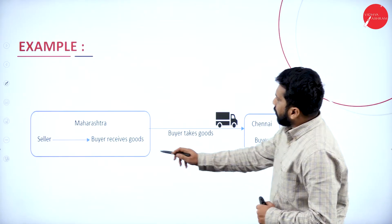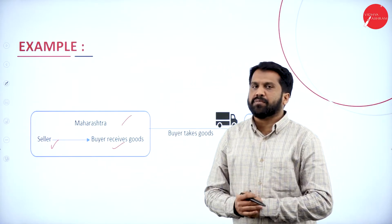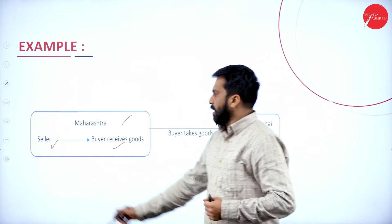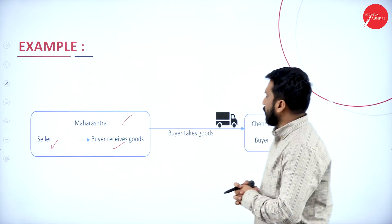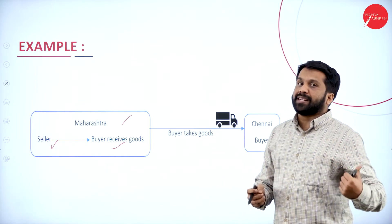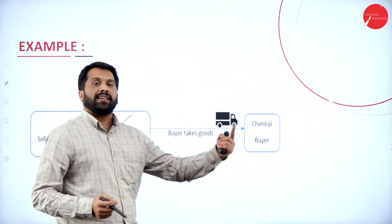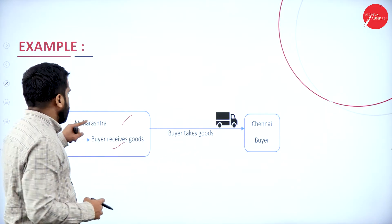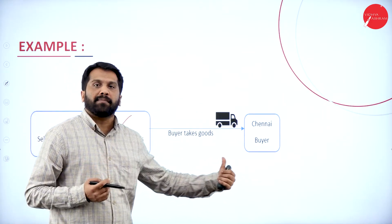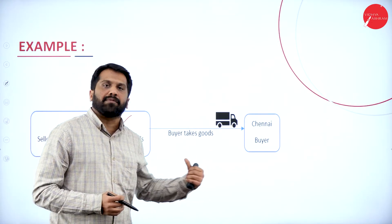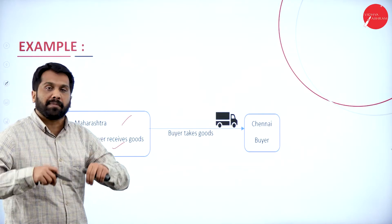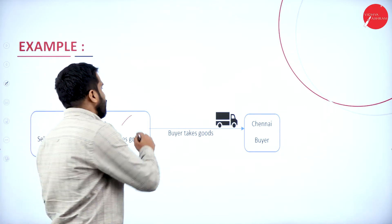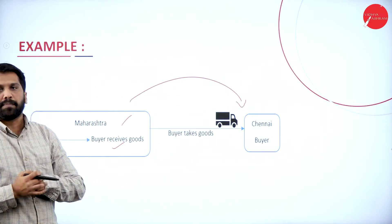The seller is in Maharashtra and the buyer both are in Maharashtra — just assume I want to purchase a mobile. I am in Maharashtra, I am the buyer, and the seller is also in Maharashtra, willing to sell in Maharashtra itself. But I said I will take goods to Chennai — I don't want delivery here, I want delivery in Chennai. So what is the supply of goods? Maharashtra to Chennai, because even though I am in Maharashtra, the sale is considered as sold to Chennai.